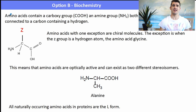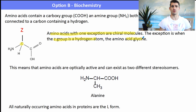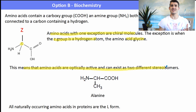Okay, amino acids. Amino acids are essentially chiral molecules. That carbon connected to the R group has four different substituents coming off it, except when we have glycine, because the R group would be a hydrogen and that would make it a non-chiral carbon. This means that amino acids are optically active and they exist as two different stereoisomers.